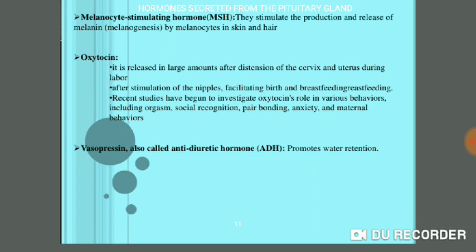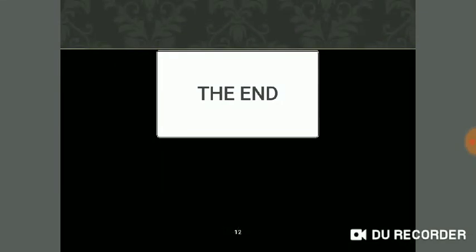When the baby suckles the mother during breastfeeding, signals go through oxytocin and contract the smooth muscles of the mammary glands to release milk. The last hormone is vasopressin, also known as ADH (anti-diuretic hormone). This maintains the water balance in the body through reabsorption of water via the kidneys — the target organ. Thank you so much for listening, see you soon.